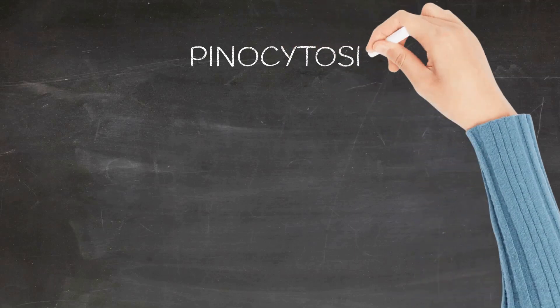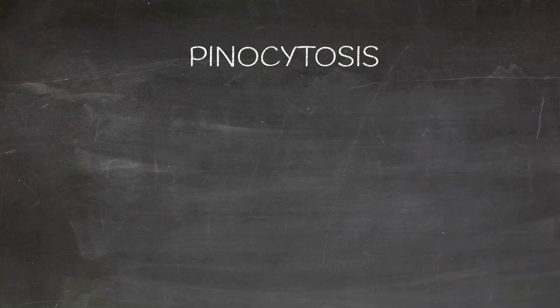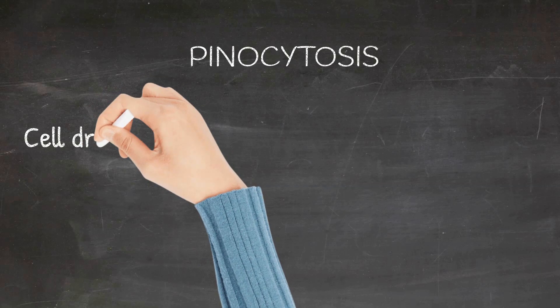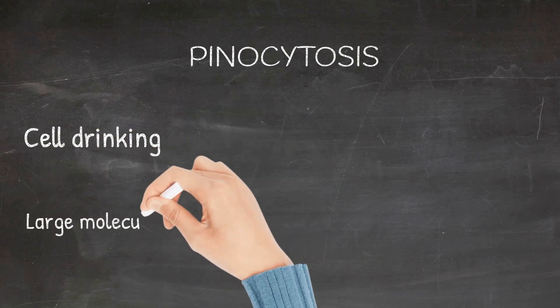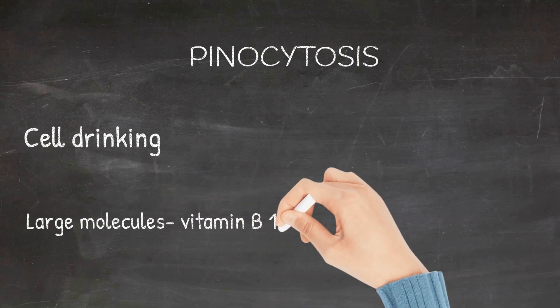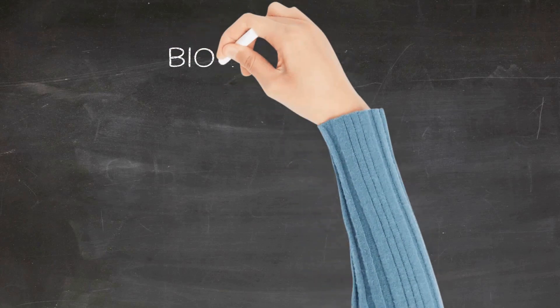Lastly, pinocytosis. Pinocytosis is otherwise called as cell drinking. Basically, this mechanism is for absorbing large molecules like vitamin B12. So drug transport mechanisms basically involves passive diffusion, filtration, carrier-mediated transport, and pinocytosis.